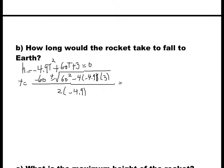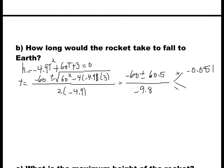If we simplify the bracket and take the square root, we get negative 60 plus or minus 60.5, divided by negative 9.8. There are two solutions, positive and negative. If we go with addition: negative 60 plus 60.5 divided by negative 9.8 gives negative 0.051. If we go with subtraction: negative 60 minus 60.5 divided by negative 9.8 gives 12.3.